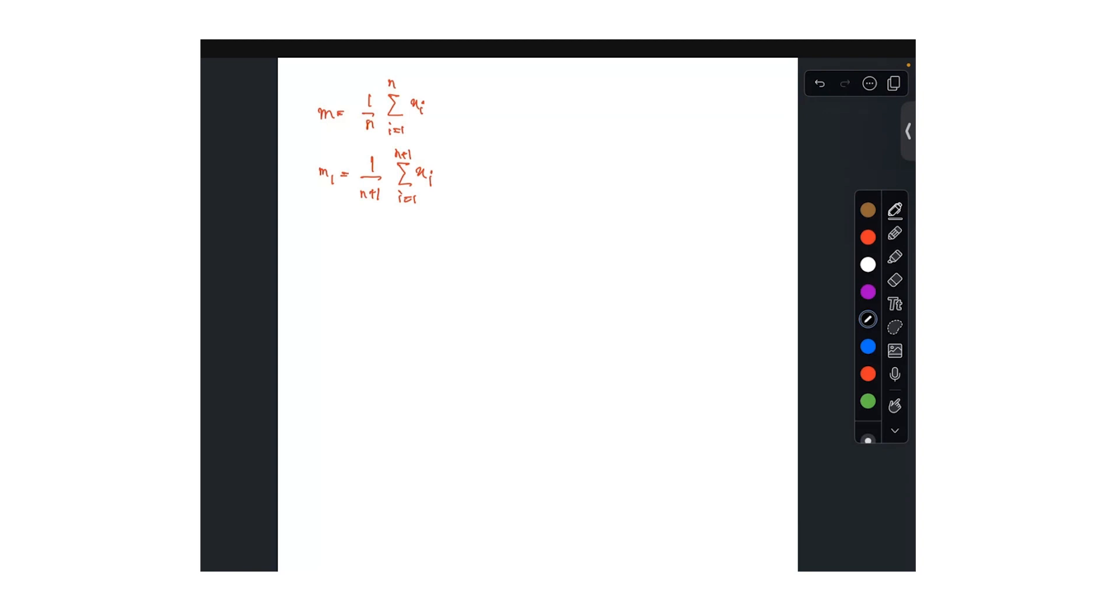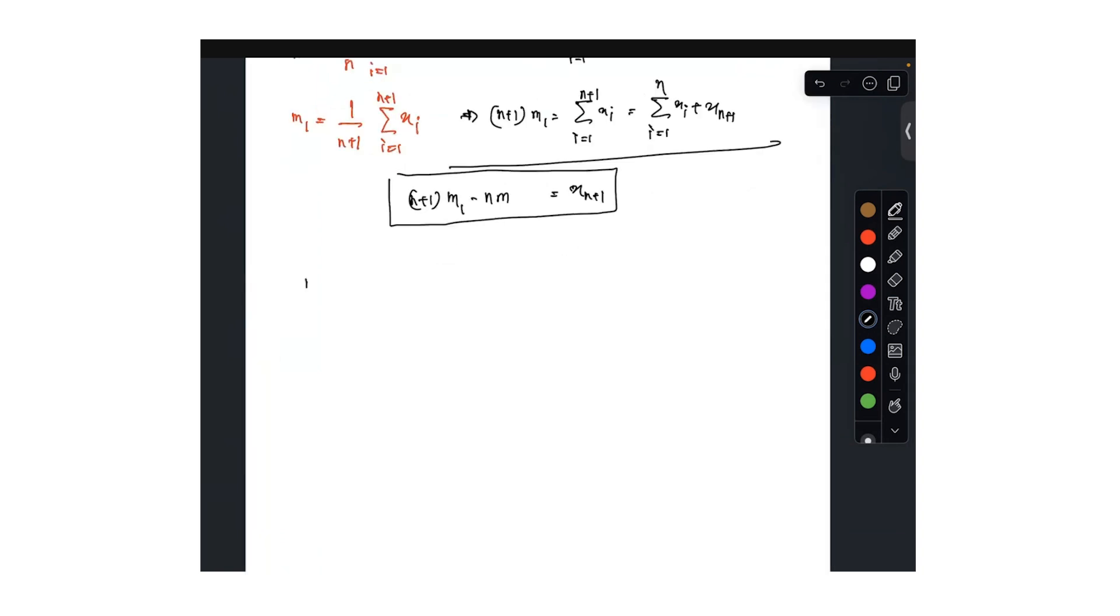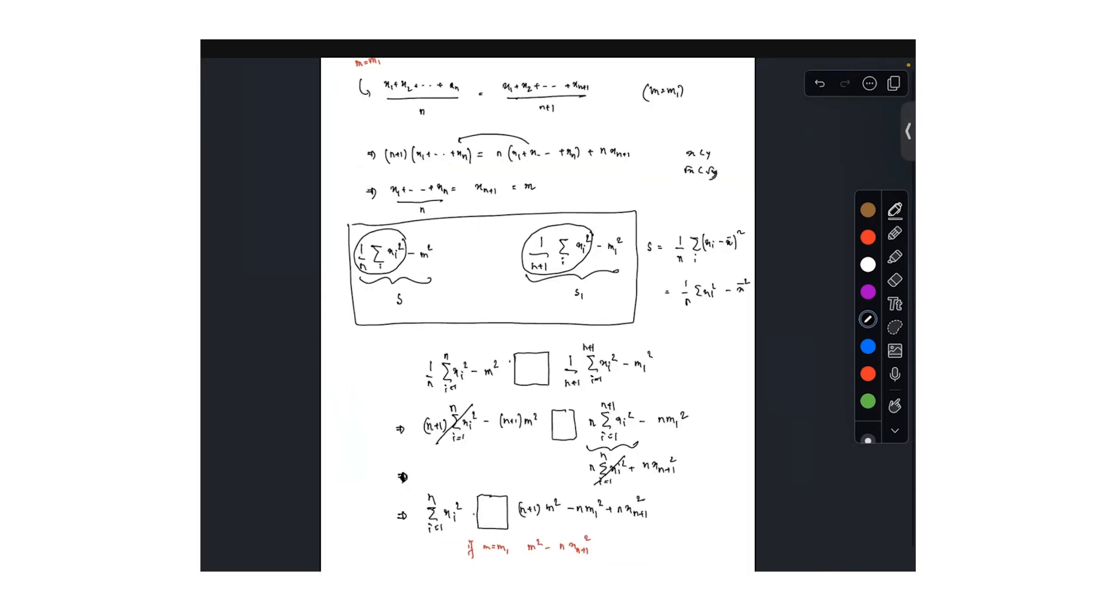Let's try to compare and find the relationship between them using xn plus 1. You understand that the relationship is nothing but n times m is summation of i from 1 to n xi, and here n plus 1 times m1 is summation of i from 1 to n plus 1 xi, which is nothing but n xi plus xn plus 1. We are doing very step by step. So if you subtract them, you get xn plus 1 on the right hand side. On the left hand side, you get n plus 1 times m1 minus nm.